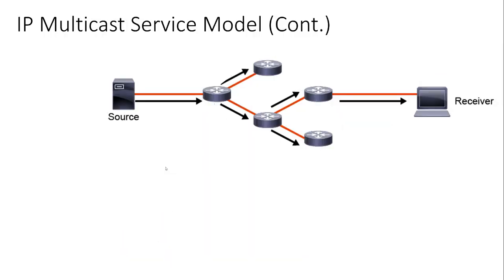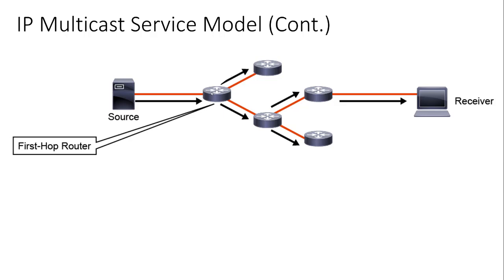When we look at our distribution tree, the source sends that packet stream out onto its local segment. The first top router is the first router to receive that stream of packets. The last-hop router is the router that our receiver actually registers with, and that's the router that forwards the packet out to the receiver.